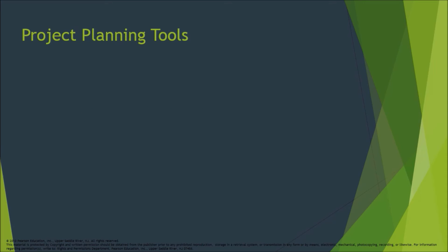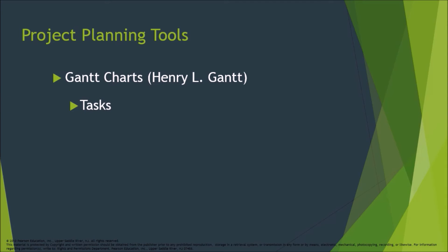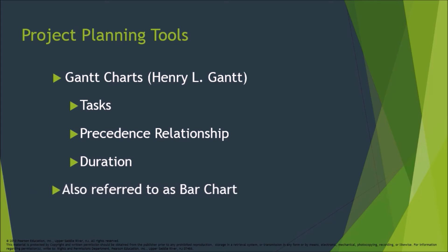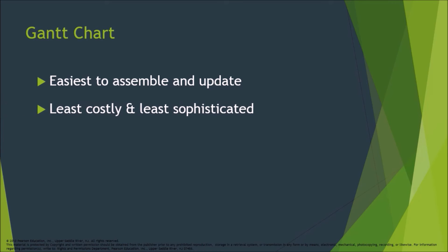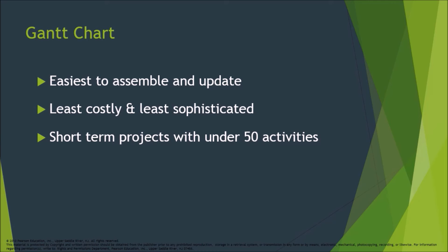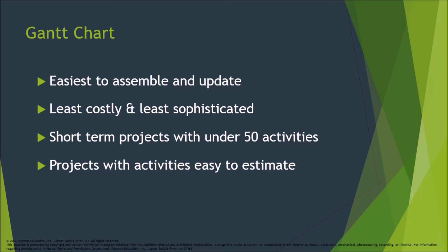Project planning tools — Gantt charts, developed by Henry L. Gantt, represent tasks, precedence relationships, and duration, also referred to as a bar chart. Gantt charts are the easiest to assemble and update, least costly and least sophisticated, best for short-term projects with under 50 activities and projects with activities easy to estimate.